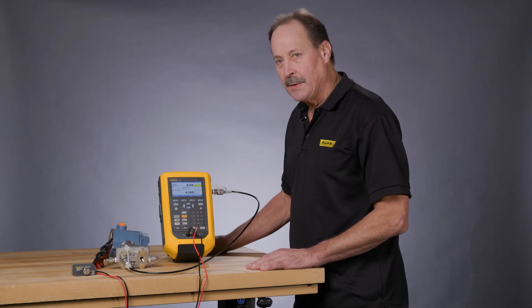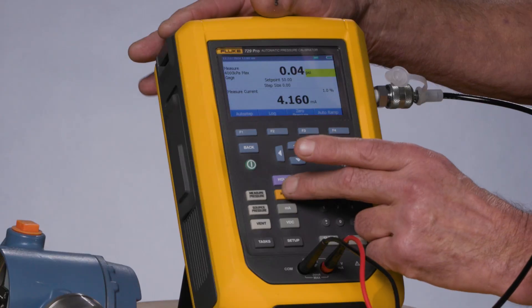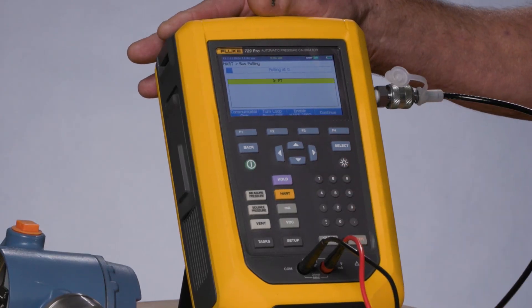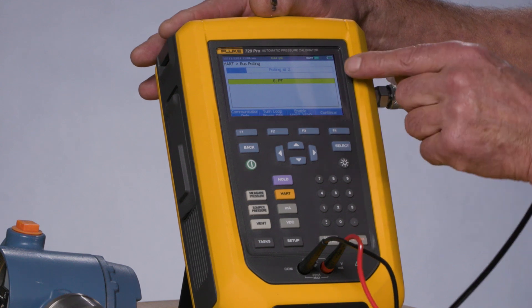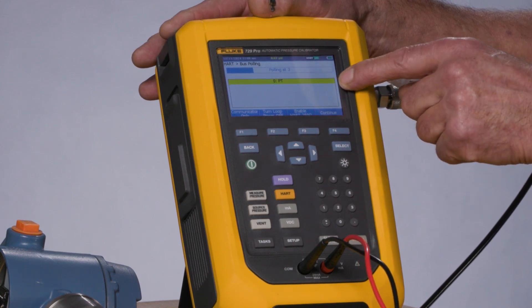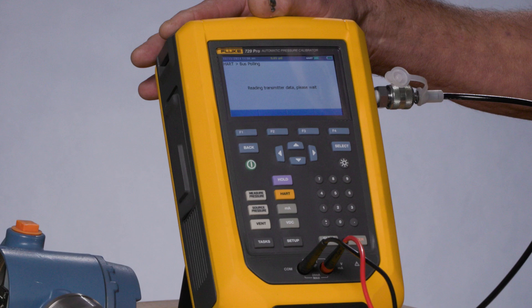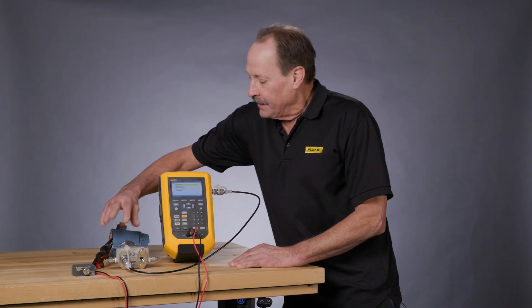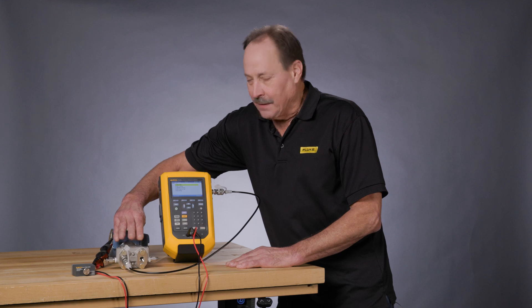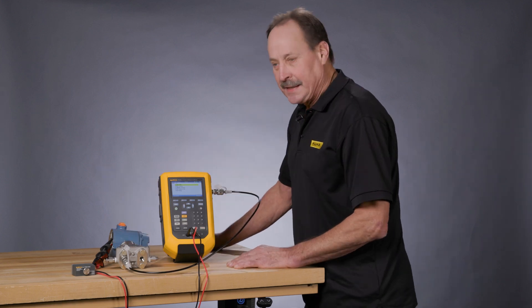To begin the test, we would initiate the test by selecting HART for HART communication. I would turn on loop power and turn on the 250 ohm resistor, and here's the tag number that was found. I press continue, and the calibrator is reading the HART device configuration of this transmitter for our testing.